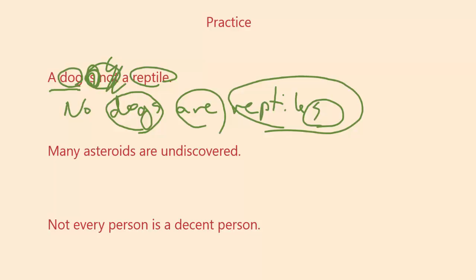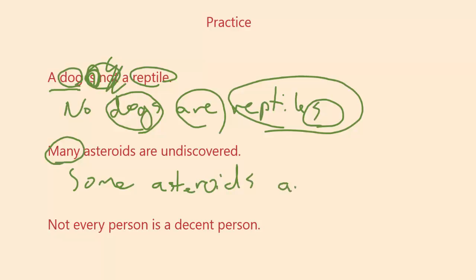Now take a look at the next statement and think about how you ought to translate it. If you recall, 'many' does not get us to universal statements because it doesn't talk about every single asteroid, so it won't be an A or E proposition. Instead, we're going to be limited to one of our particular propositions. So: 'some asteroids are...' — and 'undiscovered' is not itself a noun, so we need to say something like 'things that are undiscovered.'